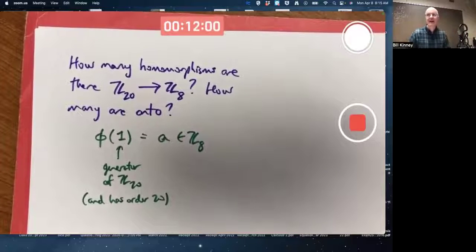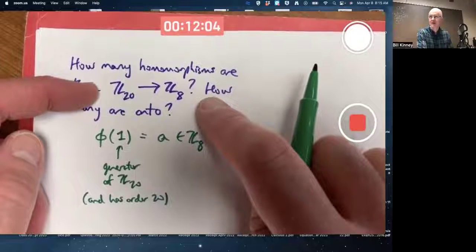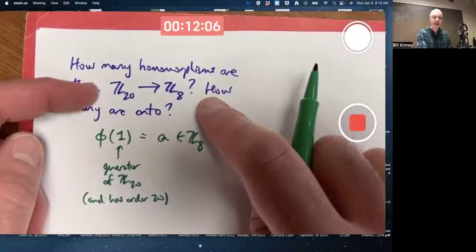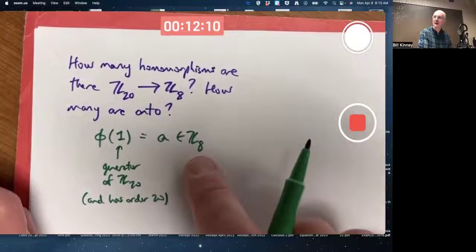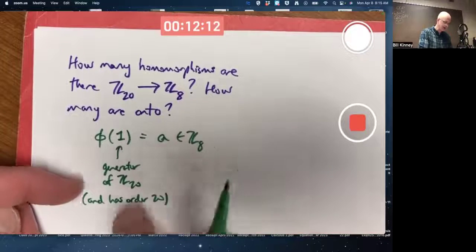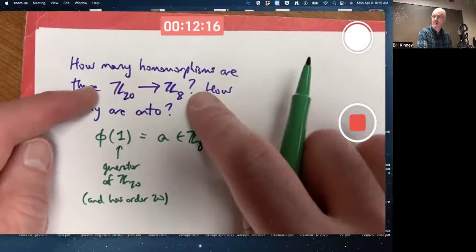If this were an isomorphism, it can't be, by the way, because Z20 and Z8 are not isomorphic. But if it were, then A would have to be a generator of whatever the codomain is, and it would have to have the same order as this thing. It would have to have order 20. Now, it's not an isomorphism because these two things are not isomorphic.